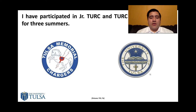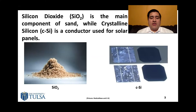So what is the silicon project? The silicon project involves finding a method to obtain crystalline silicon, or c-Si, from silicon dioxide, SiO₂. Silicon dioxide is the main component of sand and therefore can be found in various places throughout earth's crust. On the other hand, crystalline silicon is a more difficult material to obtain, and especially more difficult to obtain from silicon dioxide.